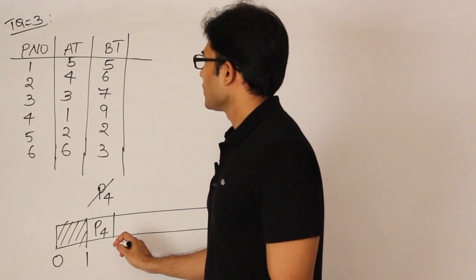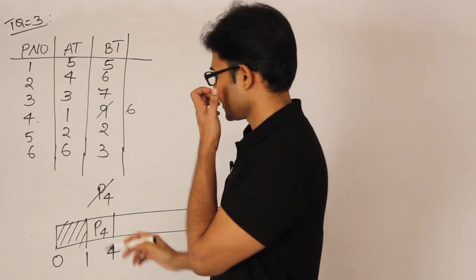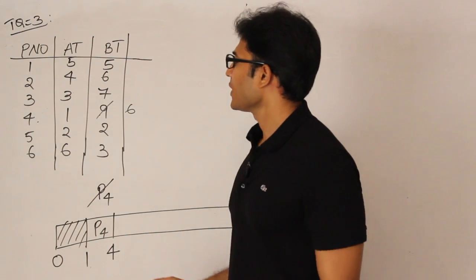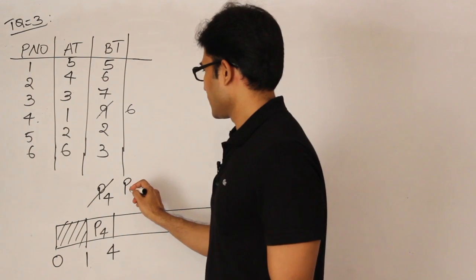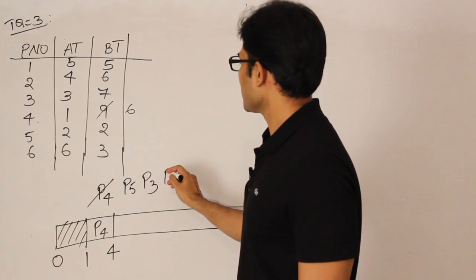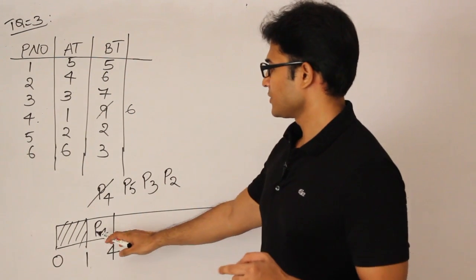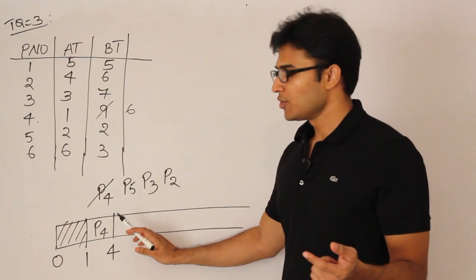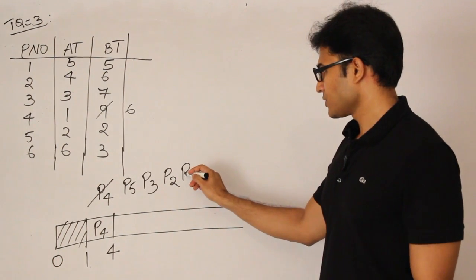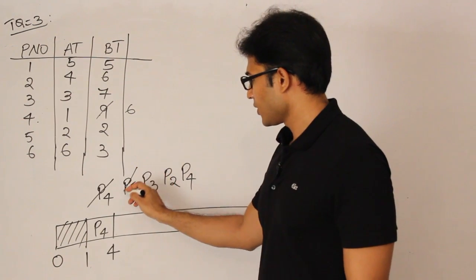So P4 runs from 1 to 4. P4 has executed for 3 units, so its remaining time is 6. By time 4, other processes have arrived: P5 arrived at time 2, P3 at time 3, and P2 at time 4. Always remember — after executing a process for the time quantum, first add processes that arrived during that time, then put the current process back. So P4 goes back to the queue, and the order is P5, P3, P2, P4.